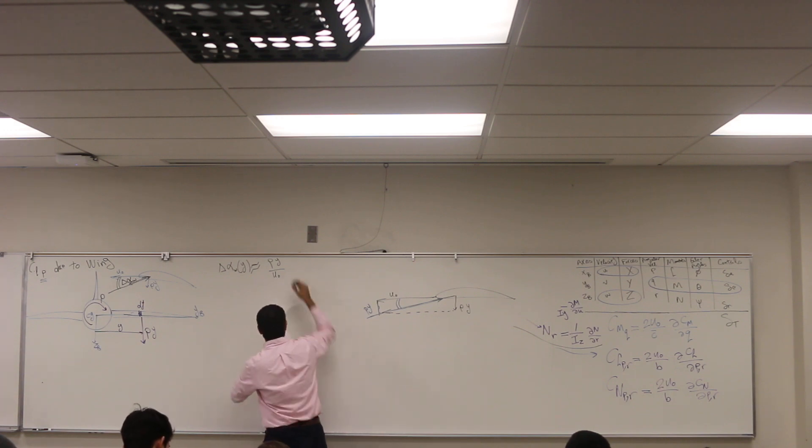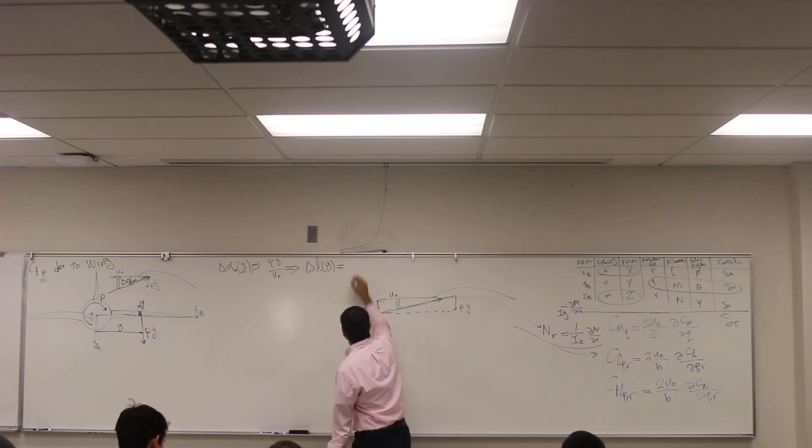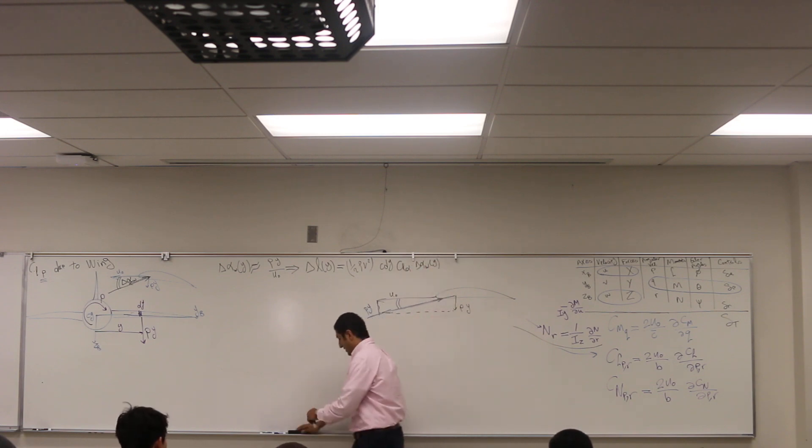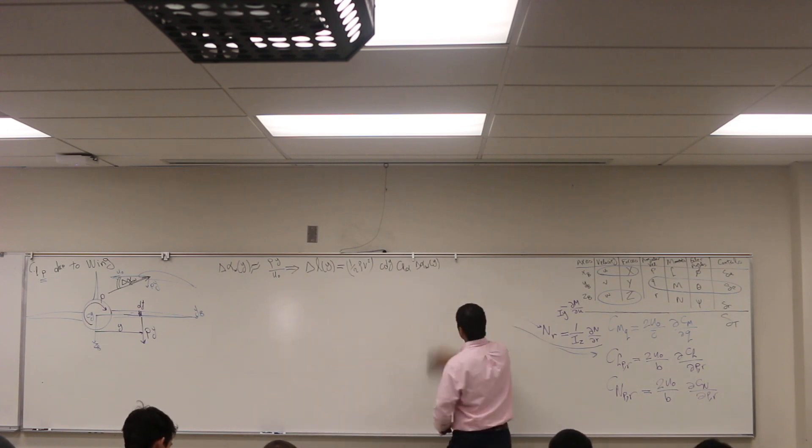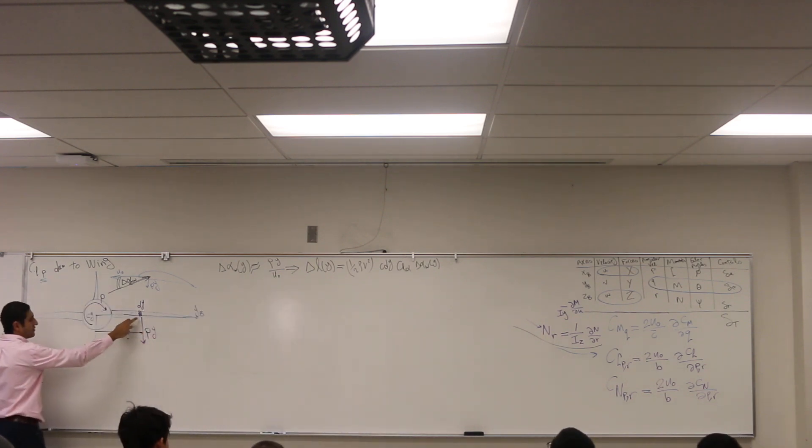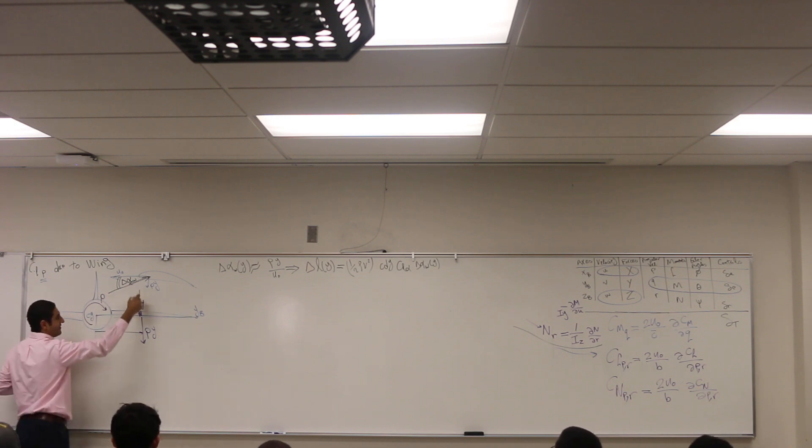So I got the change in the angle of attack on the wing. This immediately changes the lift on the wing. Delta lift on the wing, and it's two dimensional, right? It's one half rho V squared, area—area is not the whole area of the wing but it's C*dY—times C_L_alpha times delta alpha. It's like what we did in the last example.